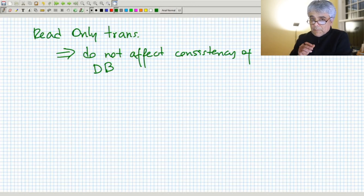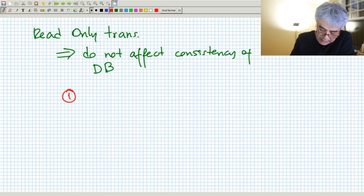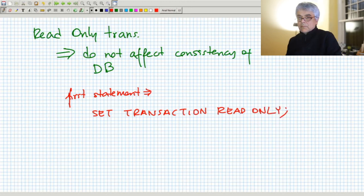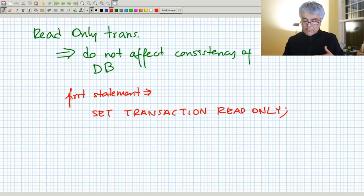So it's very useful if we want to maximize throughput to tell the DBMS that our transaction is read-only. And how we do that? The very first statement, the first statement, should be SET TRANSACTION READ-ONLY. And then anything that comes after cannot have any updates, insert, deletes, etc. You cannot modify the schema of the database, essentially just select select select.